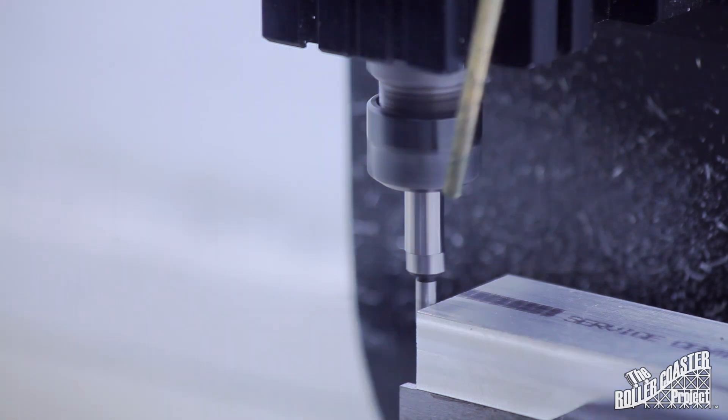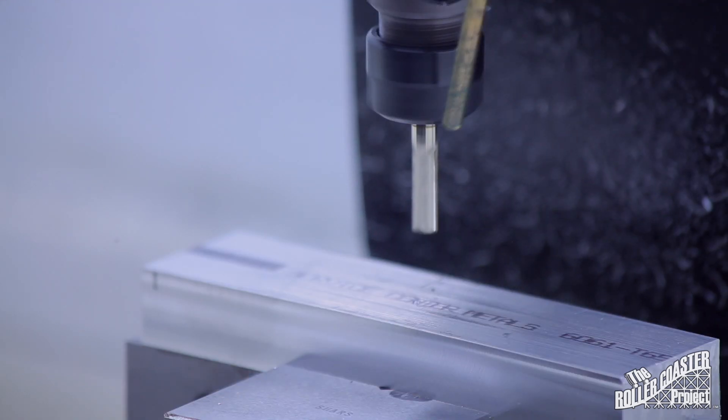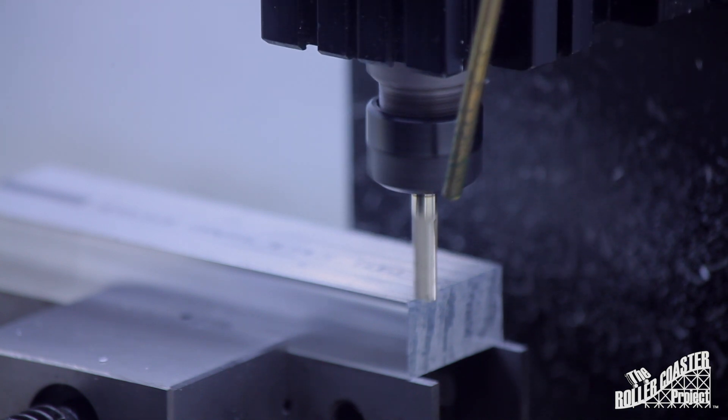Once I located the part with the edge finder it was time to mill some aluminum. I started with my new quarter inch three flute end mill for a facing cut, 2D adaptive clearing, and a finishing 2D contour, all via Fusion 360.